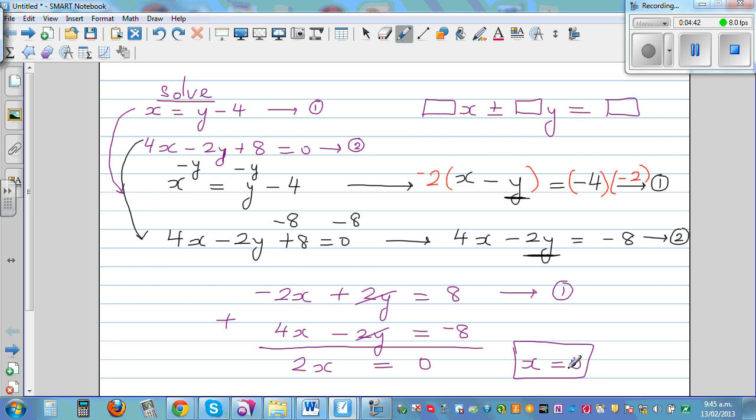So x is 0. So let's write this equation again. x is equal to y minus 4. So I can stick in 0 in place of x. So 0 is equal to y minus 4. So now you use simple logic. What take away 4 gives you 0? Well, y has to be 4. So x is 0 and y is 4.